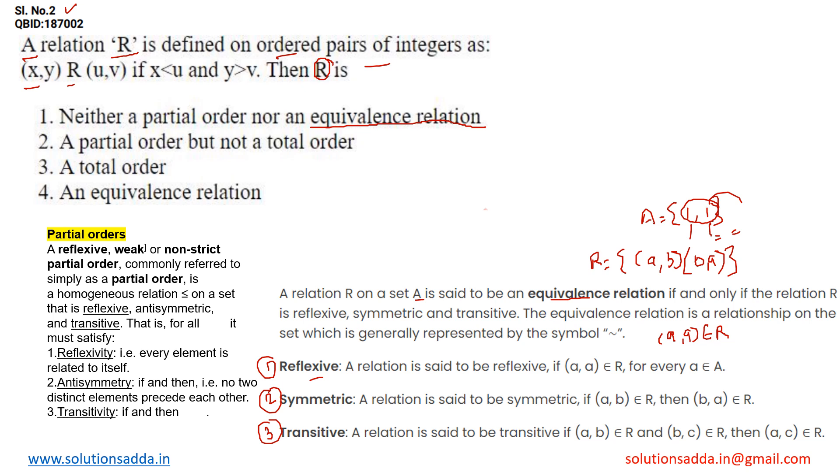Next, transitive. A relation is said to be transitive when (A,B) belongs to R and (B,C) belongs to R, and (A,C) also belongs to R. This kind of property is called the transitive property. When a relation has these three properties, it is called an equivalence relation.